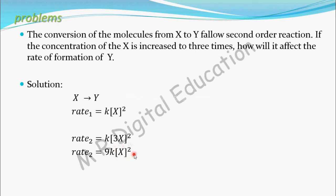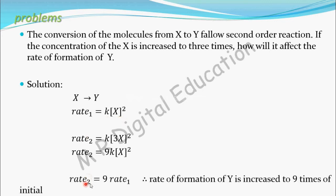Put KX square as rate 1, because rate 1 equals KX square. So rate 2 equals 9 times of this rate 1.